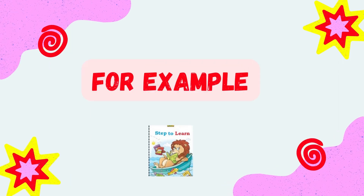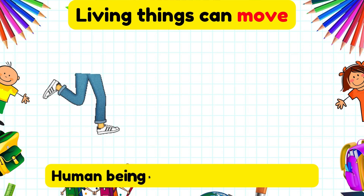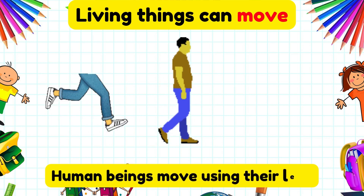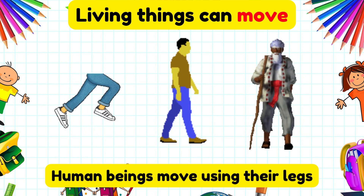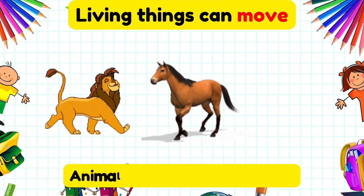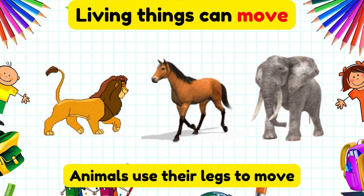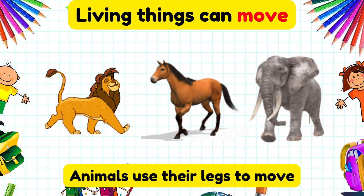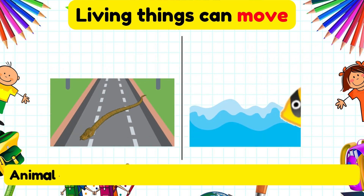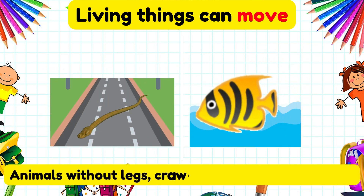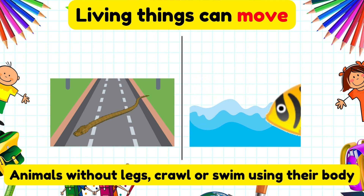Living things can move. Human beings move using their legs, animals use their legs to move, and animals without legs like snakes and fish crawl or swim using their body.